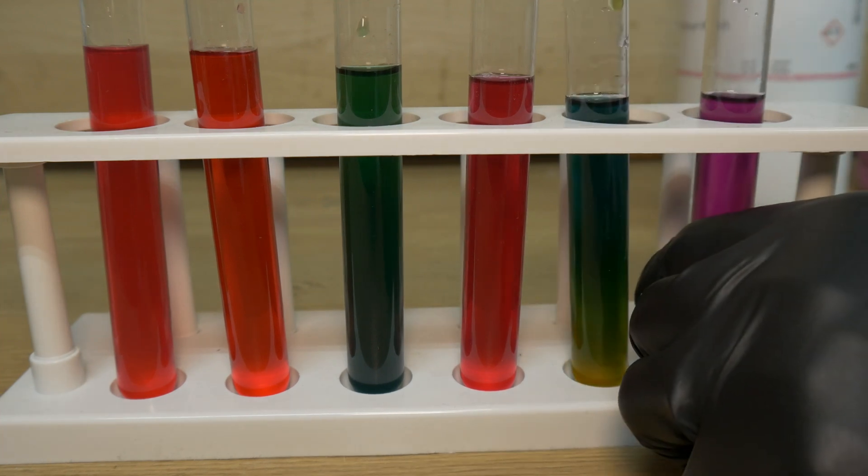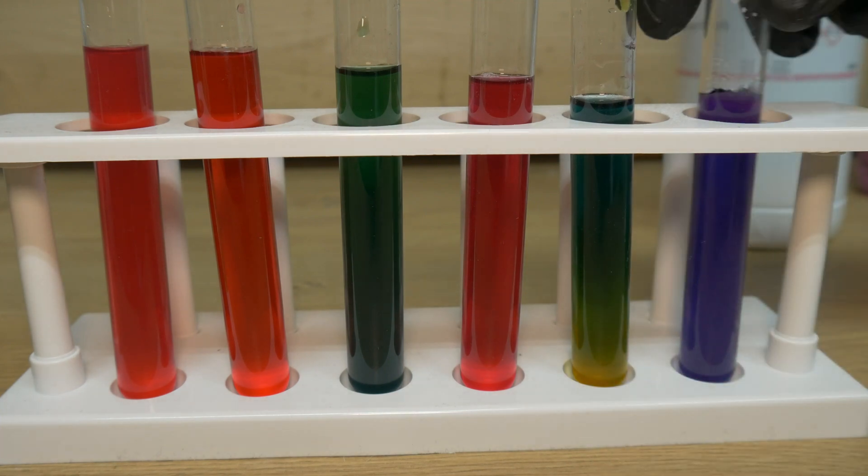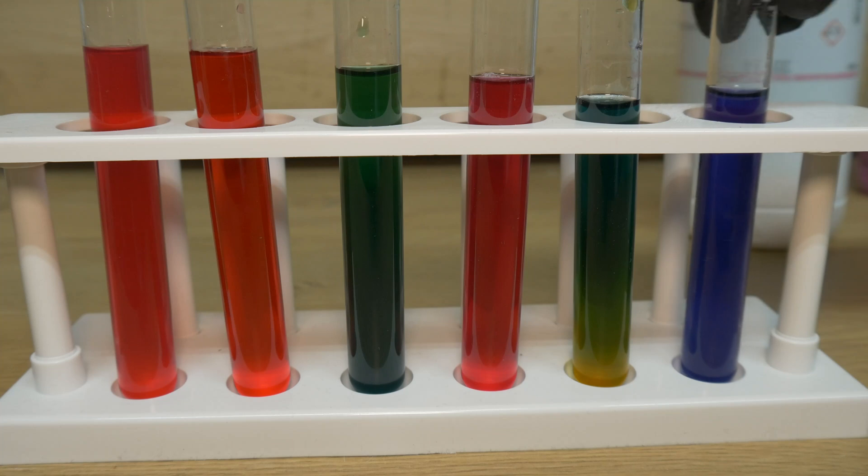Now in the sixth and last test tube we will add some baking soda. As soon as we did that, you can see that the solution will turn blue, which means that it has a pH of about 10, meaning it's a base.